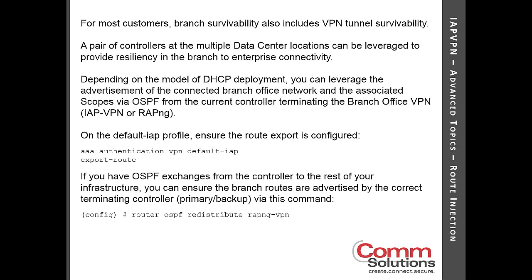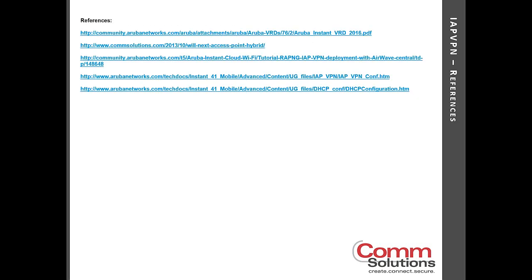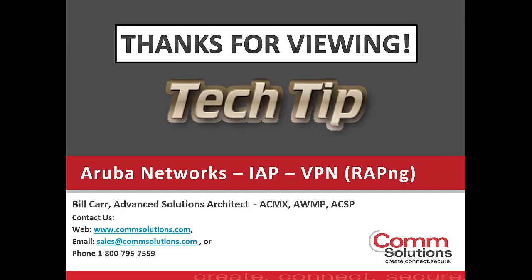Hopefully that was useful for those who have never seen or touched an IAP VPN. This was meant to be a cursory introduction. References used here come from the Aruba community website and Aruba technical notes on Instant IAP VPN configuration and DHCP configuration. For questions or more details on how an IAP VPN environment can help your distributed locations, give us a call at CommSolutions or email your local account representative.